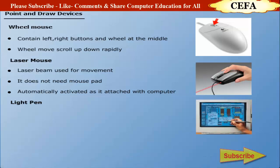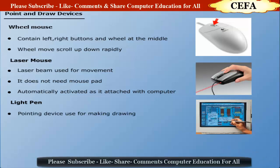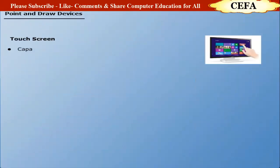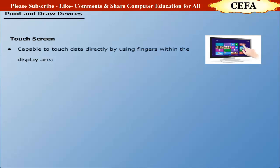Light pen: A light pen is a pointing device used for making drawings. It moves rapidly on the screen just like an ordinary pen but works with electricity. It does not need any alphabetic keys. Touch screen: A touch screen enables the user to touch data directly using fingers within the display area. It is very simple and easy to use and is currently also used in mobile phones.